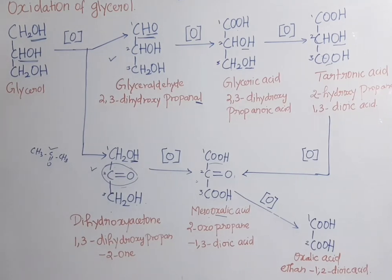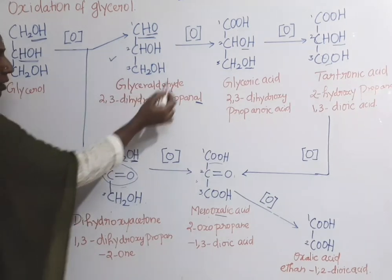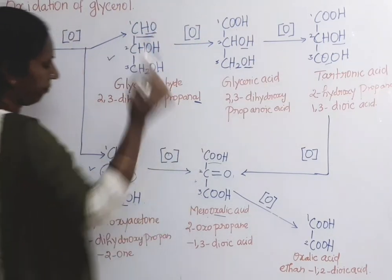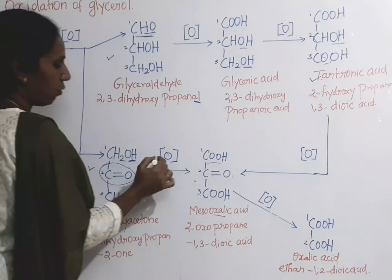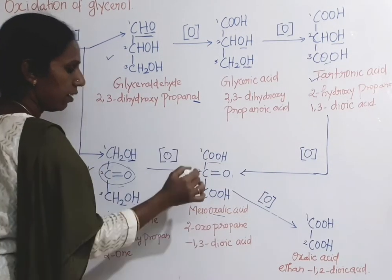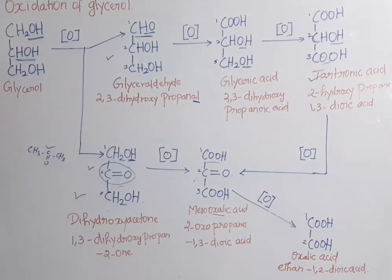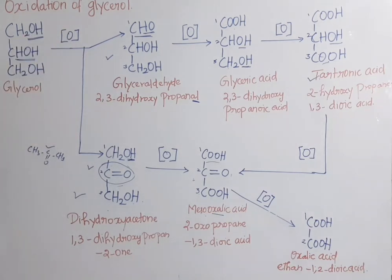In summary: glycerol undergoes oxidation to give 2 products — glyceraldehyde and dihydroxyacetone. Glyceraldehyde undergoes oxidation to form glyceric acid, which undergoes oxidation to form tartronic acid. Tartronic acid and dihydroxyacetone both undergo oxidation to give the same product, mesoxalic acid. Finally, mesoxalic acid undergoes oxidation to form oxalic acid. Glycerol generally undergoes oxidation using concentrated nitric acid or dilute nitric acid to form glyceric acid.